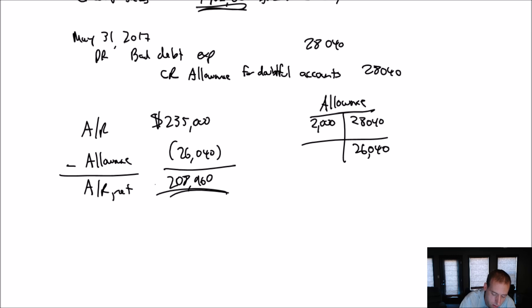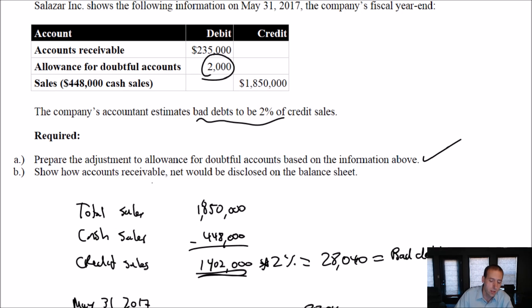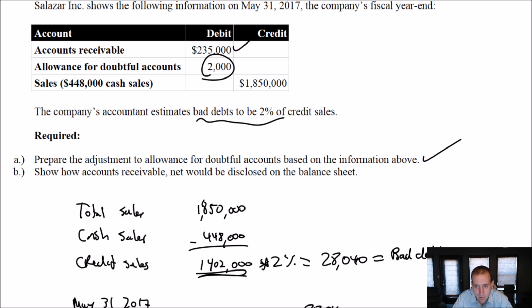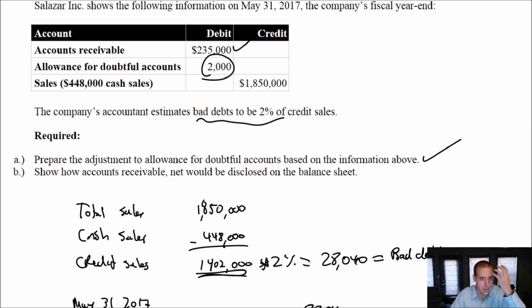Let's think about what all this means. I am owed $235,000 — I've done work and sent out bills. Based on past experience, not all customers pay. Some go bankrupt, some disappear, some dispute what they owe. Most will pay; some will not. I have to estimate those that aren't going to pay — I can't wait, otherwise I'm violating the principle that says I need to record revenues and the related expenses in the same fiscal period. Used to be called the matching principle.